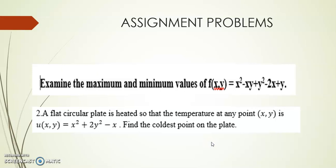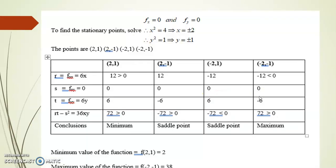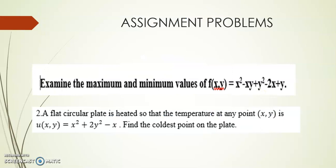Now let's look at the assignment problems. Assignment 1: find the maximum and minimum values — the extremum — of f(x,y) = x² - xy + y² - 2x + y. Differentiate with respect to x and y, equate to 0, get the stationary points, tabulate and find r, s, t. Substitute those points and give your conclusions.